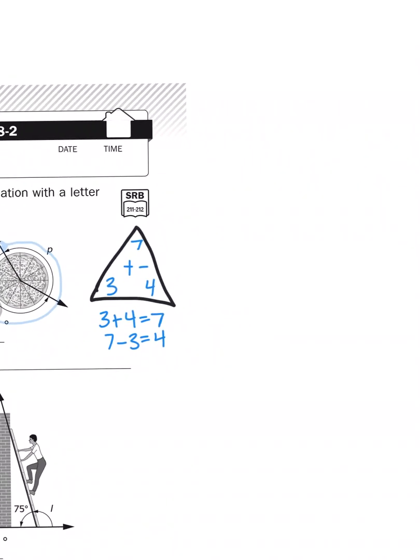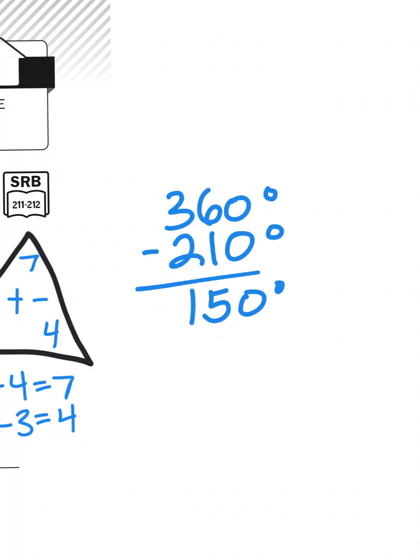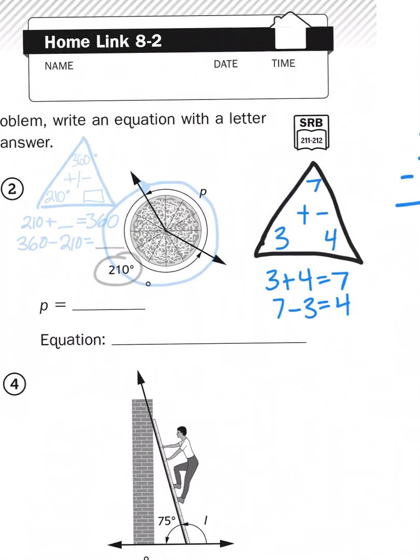Well, when I'm subtracting large digit numbers, it's always better if I write them vertically. So 360, 210, 0 minus 0, 6 minus 1, 3 minus 2, and my answer is 150 degrees. That's my missing measurement.